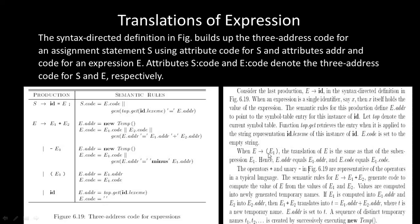When E produces E1, the translation of E is the same as that of sub-expression E1, meaning E.addr equals E1.addr. Likewise, we translate the plus and unary minus operators using semantic rules and their productions. For the translation of expressions, we integrate the syntax-directed definition along with the three-address code format and attribute spelling.